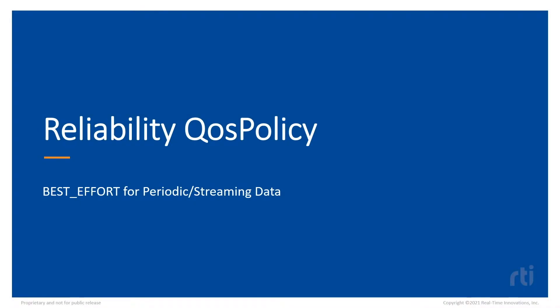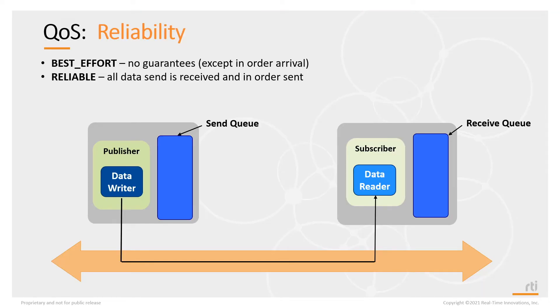The reliability QoS policy is used to configure how reliable a connection between a data writer and a data reader is. By default there is no reliability — this is known as best effort. There are no guarantees that data sent by a data writer will be received by a data reader. It could be lost on the network and DDS will not try to keep track of that or repair any lost packets.